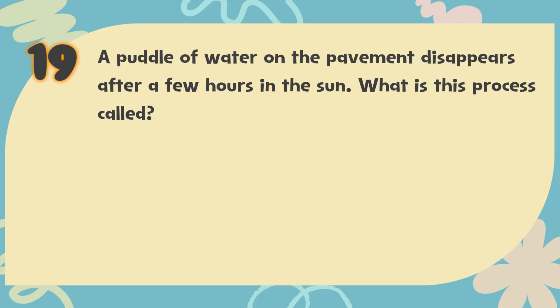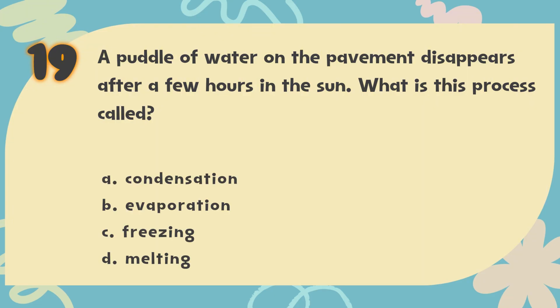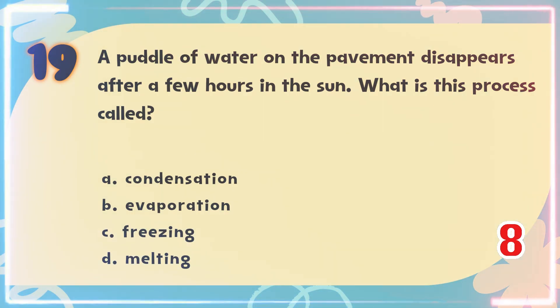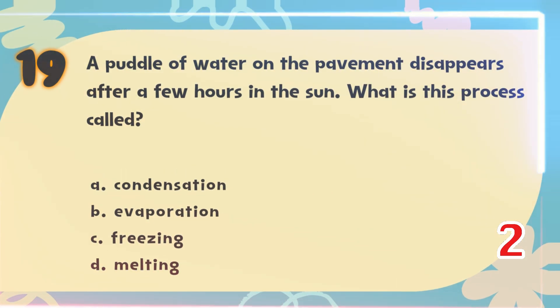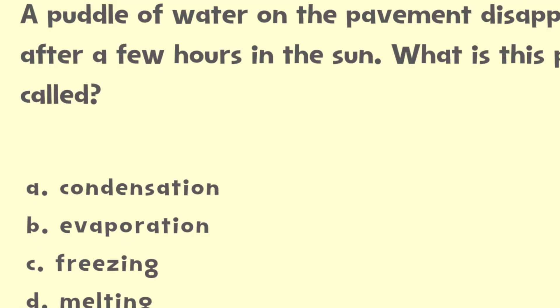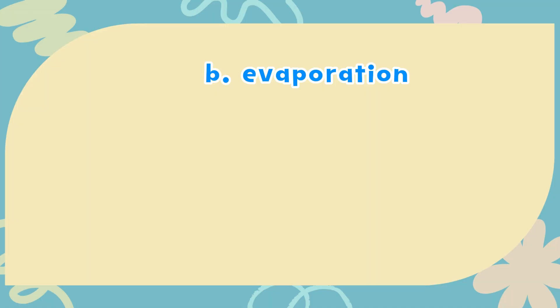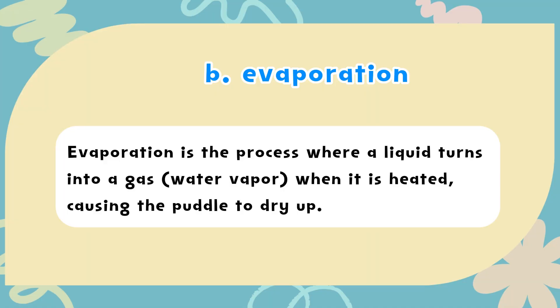Number 19. A puddle of water on the pavement disappears after a few hours in the sun. What is this process called? The choices are: A. Condensation, B. Evaporation, C. Freezing, D. Melting. The correct answer is B. Evaporation. Evaporation is the process where a liquid turns into a gas — water vapor — when it is heated, causing the puddle to dry up.